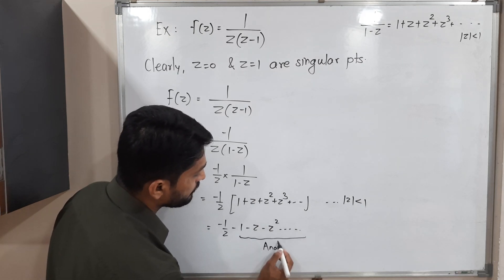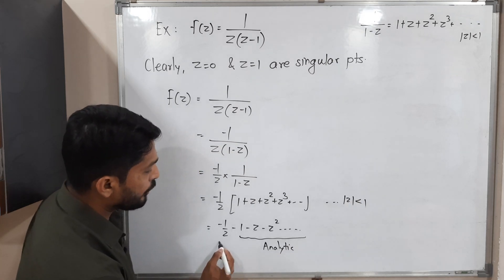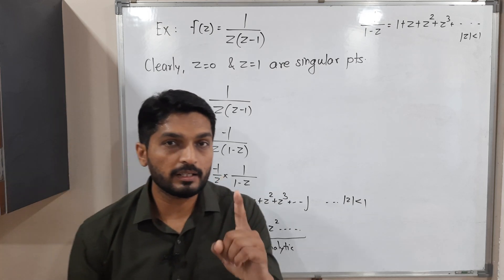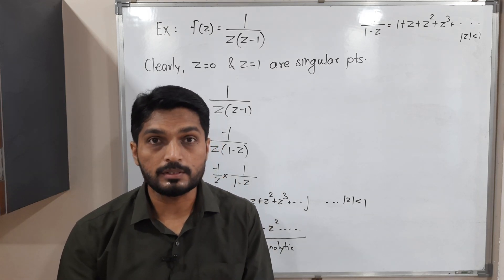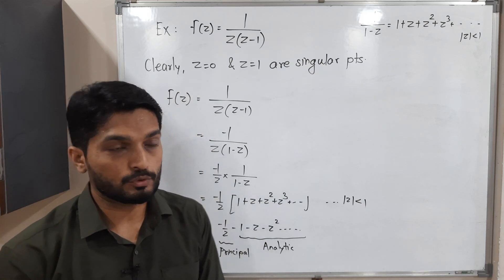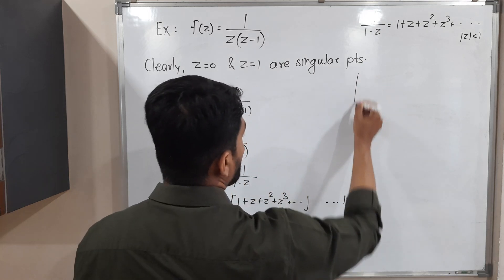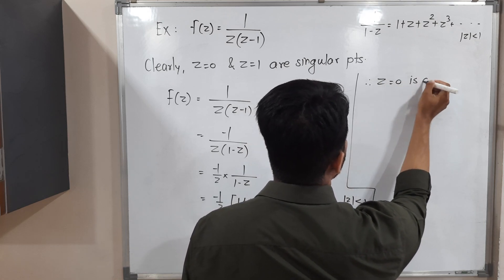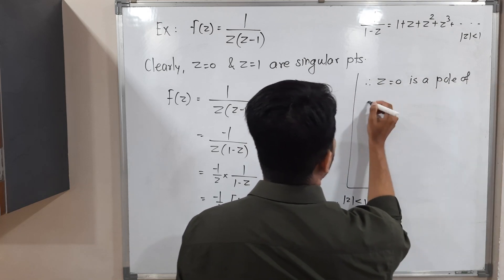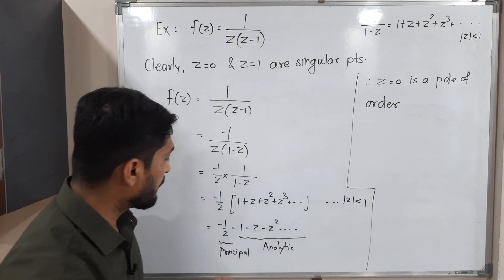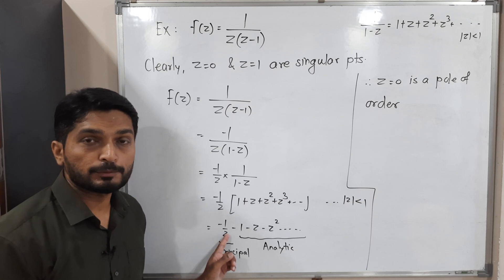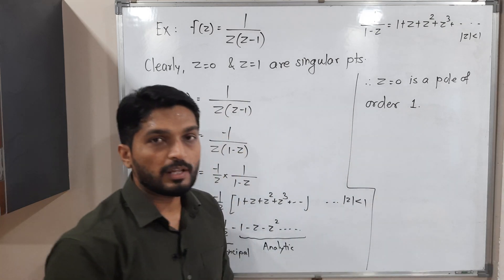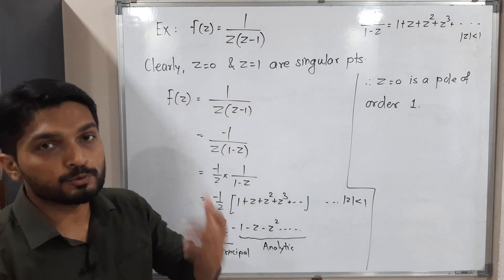In this expansion, the term minus 1/z has z in the denominator — that is the principal part — and the remaining terms have z in the numerator — that is the analytic part. The principal part has only one term, so it is finite. Therefore z equals 0 is a pole of order 1, since the highest power of z in the denominator is 1.